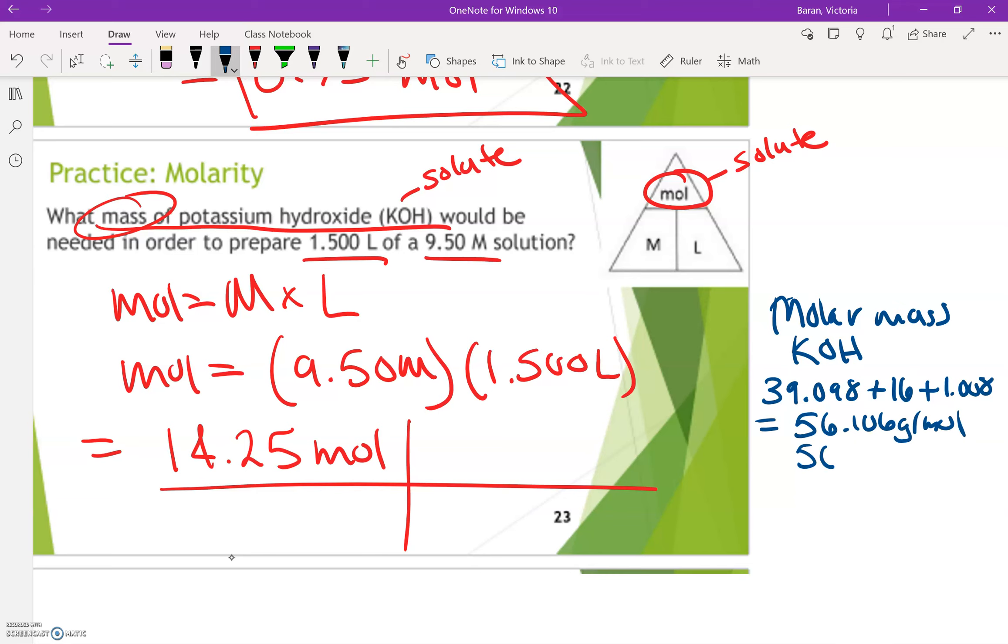So my picket fence here, if I have moles here, I also have to have moles here in the bottom. So they cancel out. Now I look at my equality. I have one mole. That is equal to what goes above it, 56.106 grams. Moles will cancel. So now I'm only left with grams.